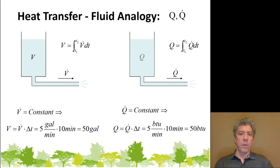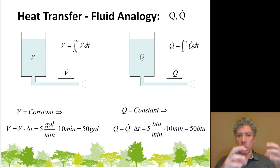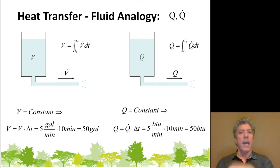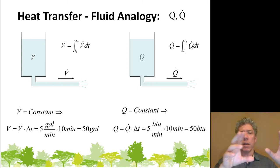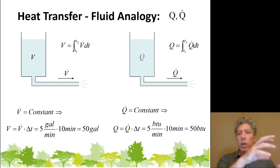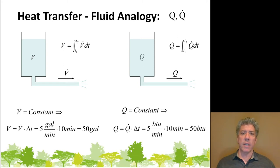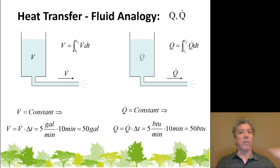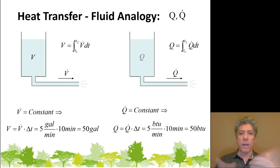Let's talk about an analogy to understand the difference between an amount of heat and a rate of heat flow. We'll call the quantity of heat transferred Q, and the rate at which heat flows Q-dot — a dot over it to indicate how much energy per time is flowing. If you imagine a vat of fluid with volume V and a pipe coming out, we can talk about the volume in the tank and the rate at which volume is leaving. We can integrate the volumetric flow rate between two times to get the volume that has left: V equals integral from T1 to T2 of V-dot dt.